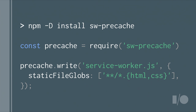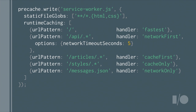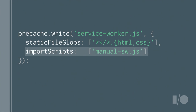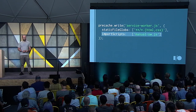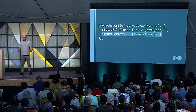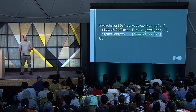That works great for the shell of your application, but aren't we losing the power of SW Toolbox for dynamic resources like API requests? As you can see, we can combine the two. The runtimeCaching option passed to SW Precache allows you to specify your SW Toolbox rules, using the same patterns and mapping to the same handlers — SW Precache will write out the SW Toolbox code into its service worker. And if you want full control, you can tell SW Precache to include another file, so you can write the SW Toolbox rules manually for your dynamic content and just tell SW Precache to load that as well.